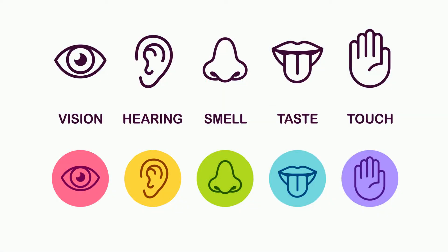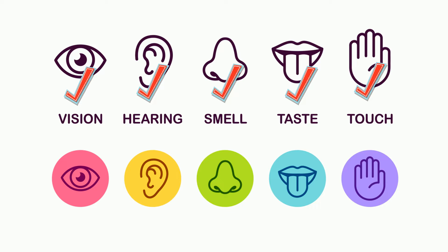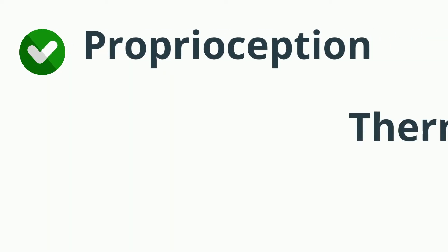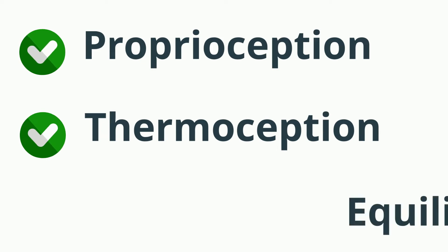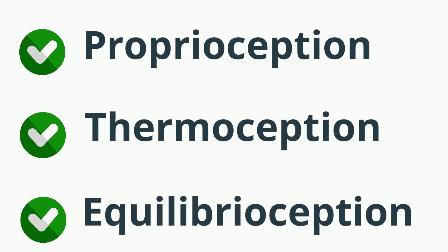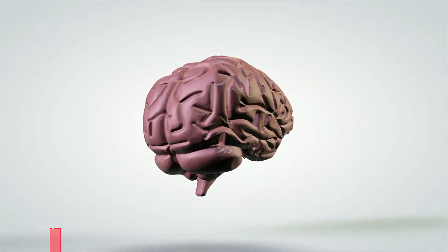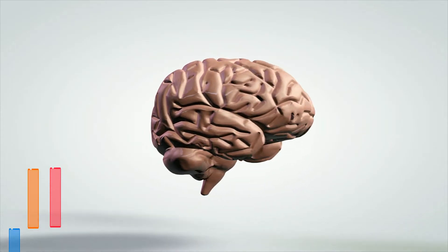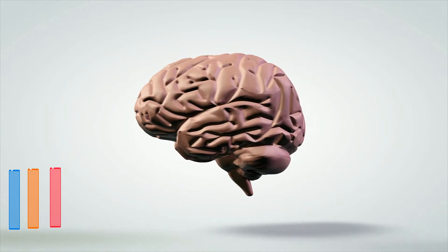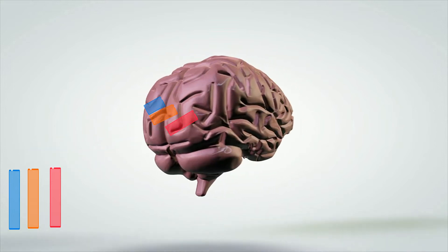Your body uses the five main senses — vision, hearing, smell, taste, and touch — along with some other senses like proprioception, thermoception, and equilibrioception to keep you alive and active in the world around you. Your senses are a combination of receptors gathering data and then sending this information to your brain that processes the data.